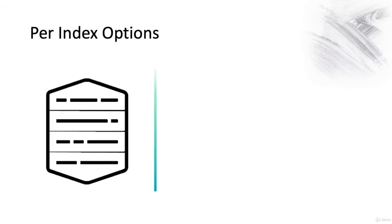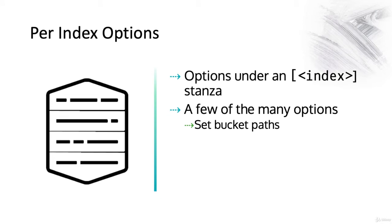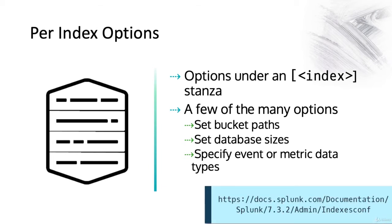We can also set per index options under an index name stanza. For some of these we can set both globally and per index. We can set bucket paths, database sizes, specify event or metric data types, and a bunch of other things. There's an index reference document on the Splunk documentation that shows you all the options for global and per index options, and I recommend you do take a look at that.